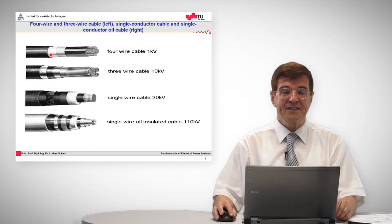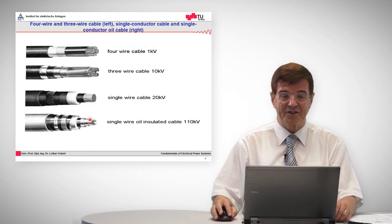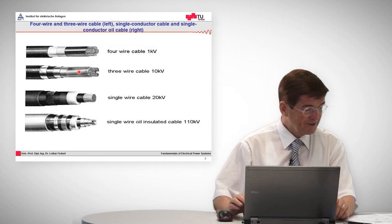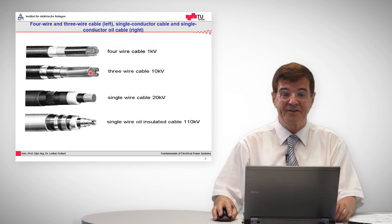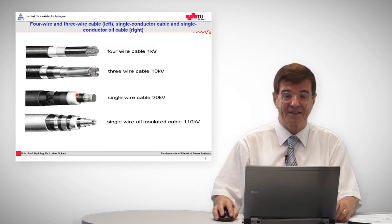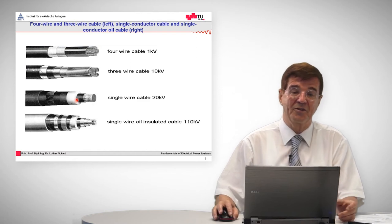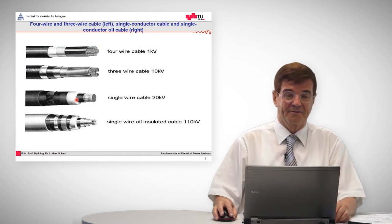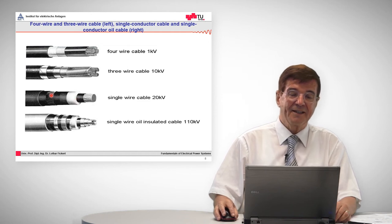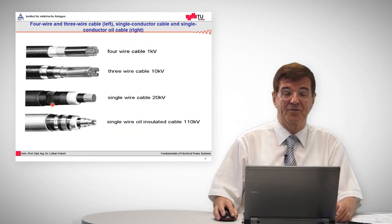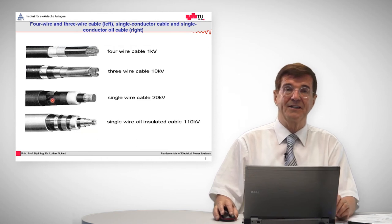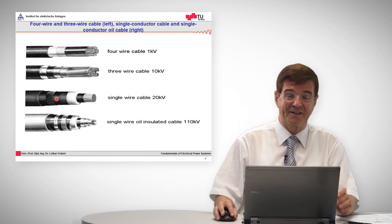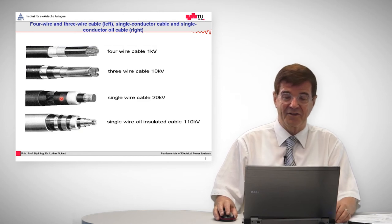Another technology is cables for low voltage, medium voltage, and high voltage. Such a cable is constructed in the way that we have the conductor in the center. Around the conductor we have the insulation which is made of polyethylene and other material. Then, importantly, we have around it another conducting shield, the so-called shield wires or shield, which is important to restrain the electricity inside of the cable, the electric field and the electric current in case of a fault.